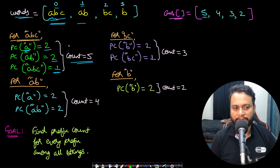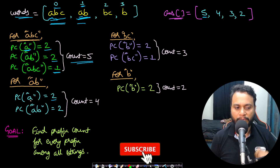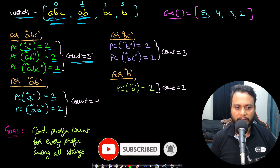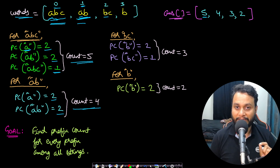For the second string 'ab', it has two prefixes: 'a' and 'ab'. Prefix 'a' occurs in strings at index 0 and 1, contributing two. Prefix 'ab' also occurs in strings at index 0 and 1, contributing two. So the total count for 'ab' is four. For the third string 'bc', it has prefixes 'b' and 'bc'. 'b' is a prefix in strings at index 2 and 3, contributing two, while 'bc' occurs only once, contributing one. Total is three.